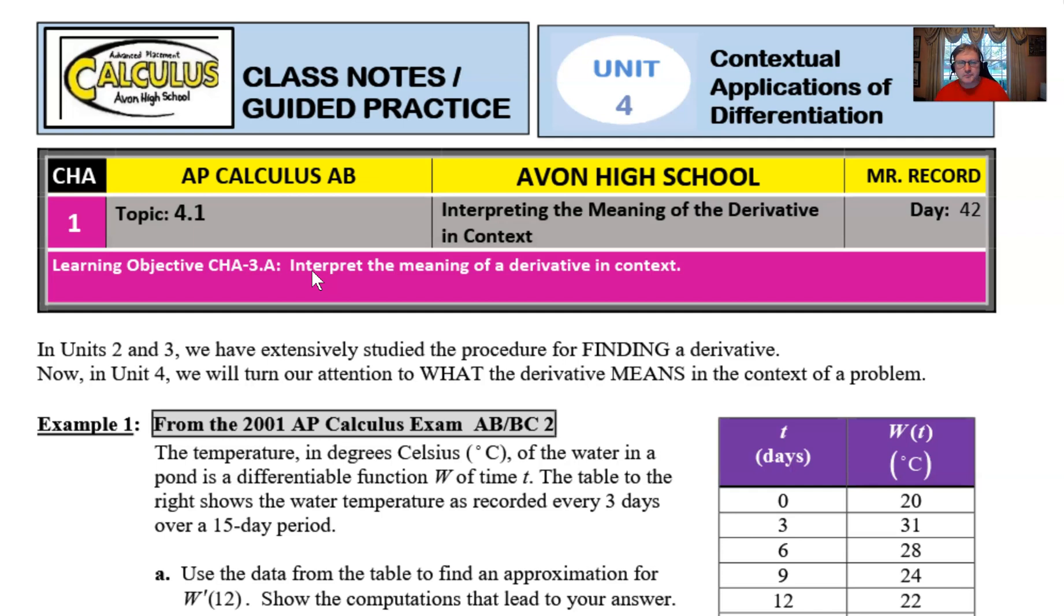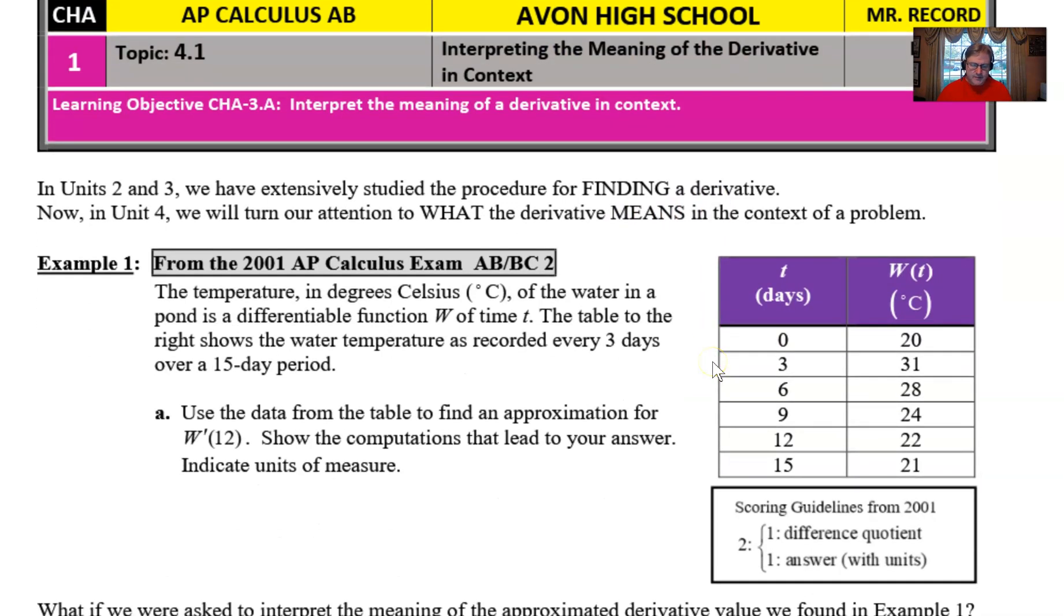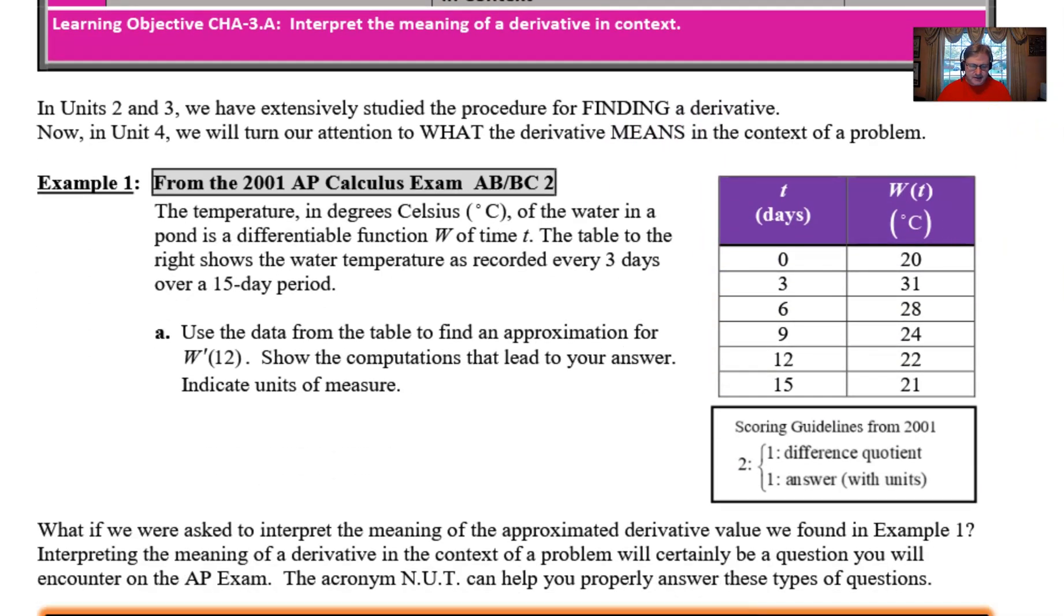So in Units 2 and 3, it says we've extensively studied the procedure for finding a derivative. You guys have really put in the time. You hopefully know the power rule, the product rule, the quotient rule, the chain rule, all those other variations that we learned in Unit 3 that dealt with composite functions and inverse functions and implicitly written equations. But now we're going to talk about in Unit 4 what the derivative means.